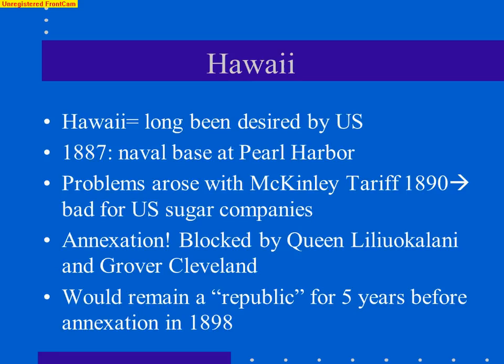The big push to acquire Hawaii came because of an economic concern. As more Americans moved to Hawaii to build businesses — particularly in sugarcane or pineapple, like Dole, for example — they obviously wanted to sell their products back to Americans in the United States. But the McKinley Tariff of 1890 was extremely high. Since these companies were technically operating in a foreign country, they were being tariffed by the United States and had to pay this extremely high tariff. Americans living in Hawaii said: the way to fix this is to take over Hawaii — then we won't have to abide by this tariff.